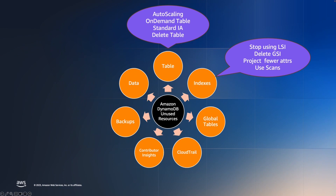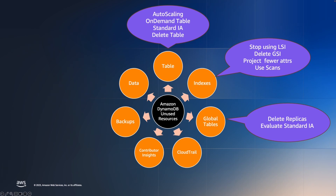The third one is unused global tables. With global tables, the replica costs are with respect to replicated WCUs, RCUs, storage, and data transfer between regions. The cost is very straightforward when calculating for the base table and the replica. Hence, if you find any replicas that are unused, you can simply go ahead and remove the region in order to avoid any replicated WCU or storage costs. But if you want to keep it as a standby or for some reads, try to see if the standard IA table class can help with the cost if the table is more storage-intensive.